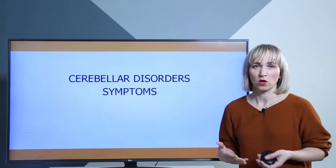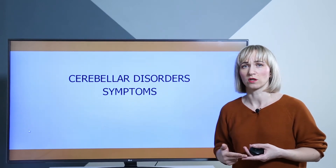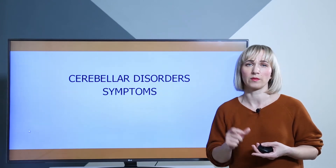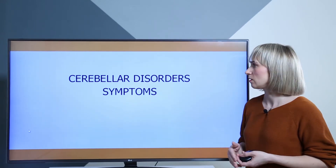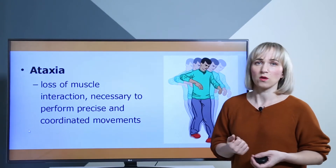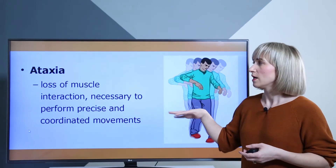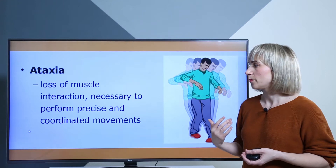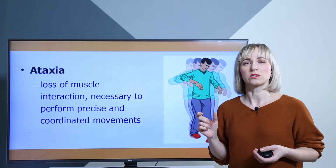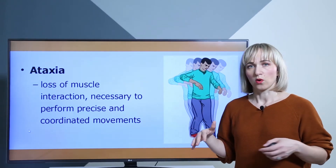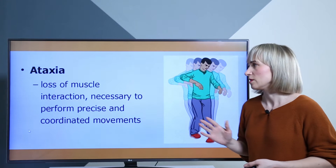Pathologies of the cerebellum are caused by different etiologies, including traumatic, ischemic, or hemorrhagic causes in the cerebellar area. When we have a traumatic incident of the cerebellum, the main symptoms include ataxia, which is most known as the loss of muscle interaction. You can see that the person is unable to perform precise and coordinated movements — they are unstable and may walk with a wide base. This is typical of ataxia.